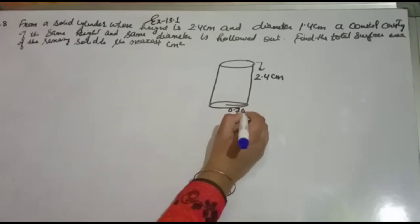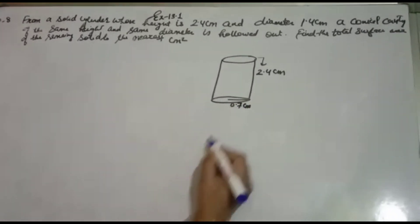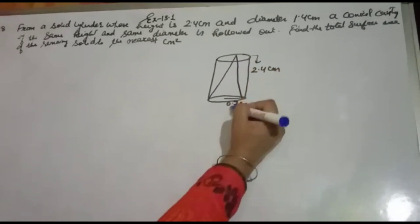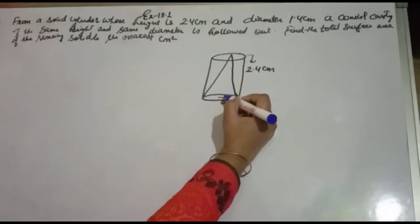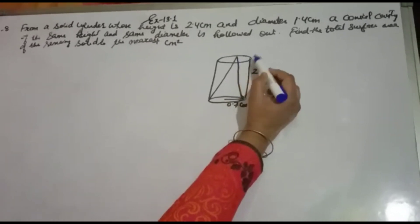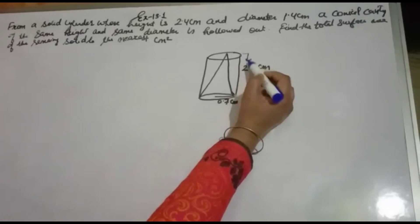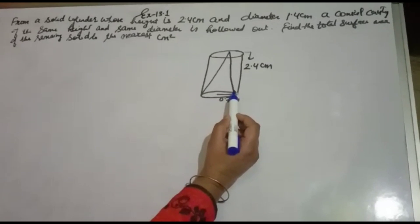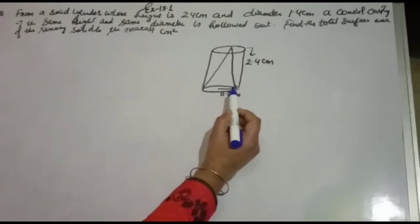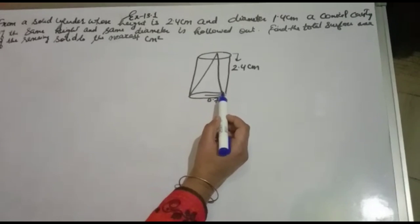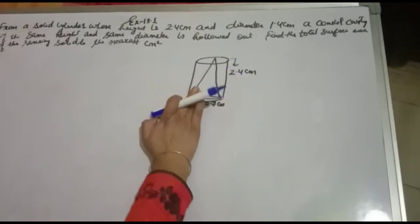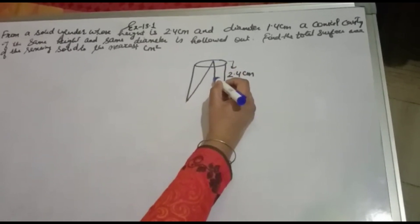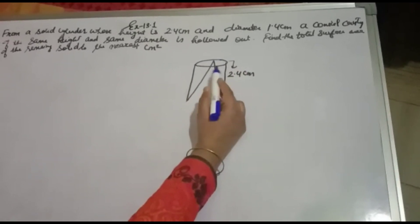A conical cavity of the same height is cut from this solid cylinder. The cone cut out has the same height and same radius as the cylinder. Find the total surface area of the remaining solid to the nearest centimeter square. If you think about it, from a solid cylinder, if you cut this conical part, you get this type of solid figure.